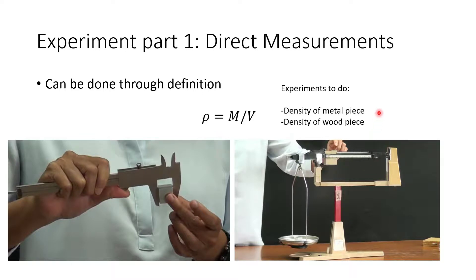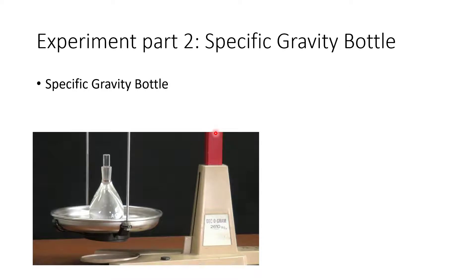The experiment you're going to be doing is measuring the density of a metal piece and a wood piece. The measurement is simple and very similar for each. You measure the mass, measure the volume, divide one by the other, and you get rho.